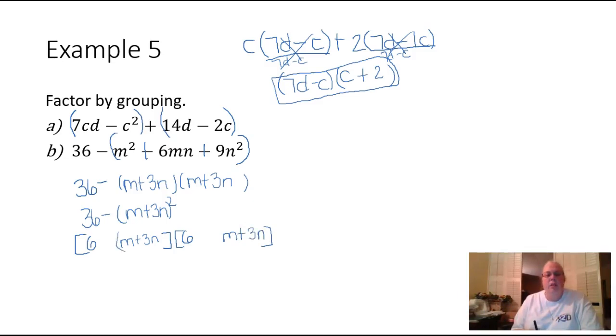And then one of these should be positive and the other one should be negative. So the last thing I'm going to do is I don't really need these parentheses in here because that's a plus sign. So we're going to have 6 plus M plus 3N. And then I'm going to distribute this negative sign into these parentheses, and that's going to turn this one into 6 minus M minus 3N. And this is how part B will factor.